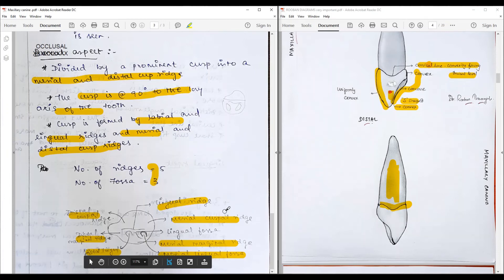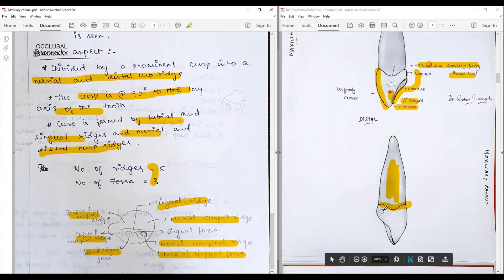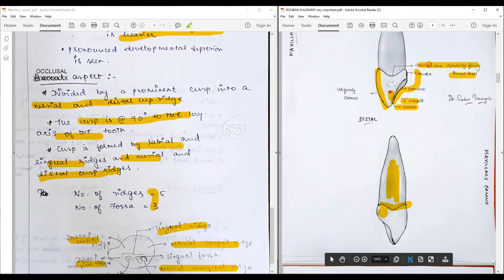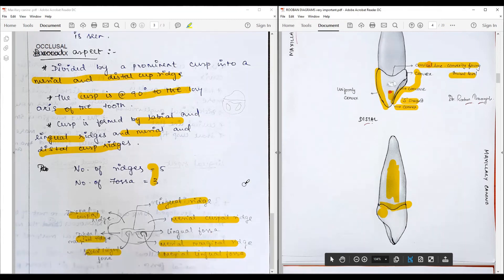We have four pulp horns: three on the buccal—mesio-buccal, distal buccal, and middle—and we have one lingual or palatal that forms the cast. This cingulum is directed towards the cingulum, situated more buccally. Embrasures and contact point also have to be mentioned because we have discussed that.